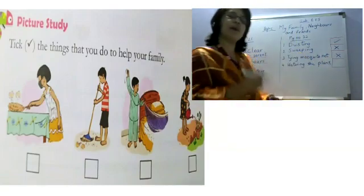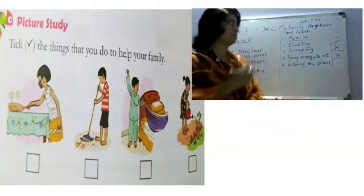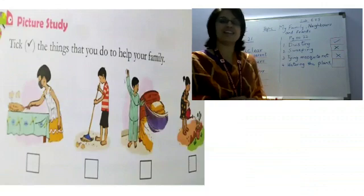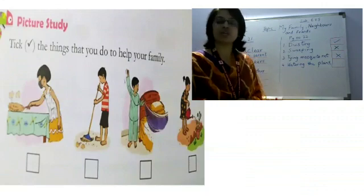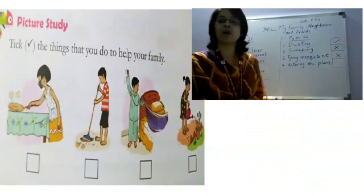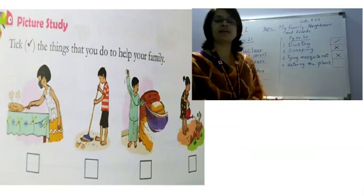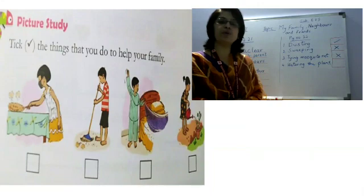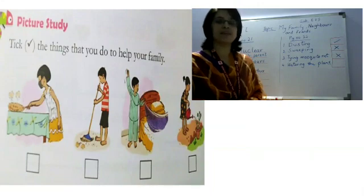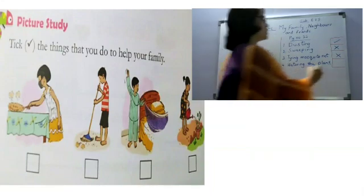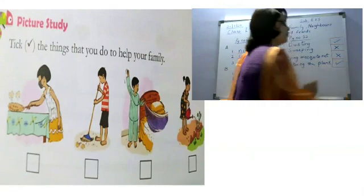We don't do it, so I put a tick mark. I'm sorry, cross mark. Now, in the fourth picture, the girl is watering the plant. If you do that, put a tick mark. Do you water the plants? Yes. Then put a tick mark here.